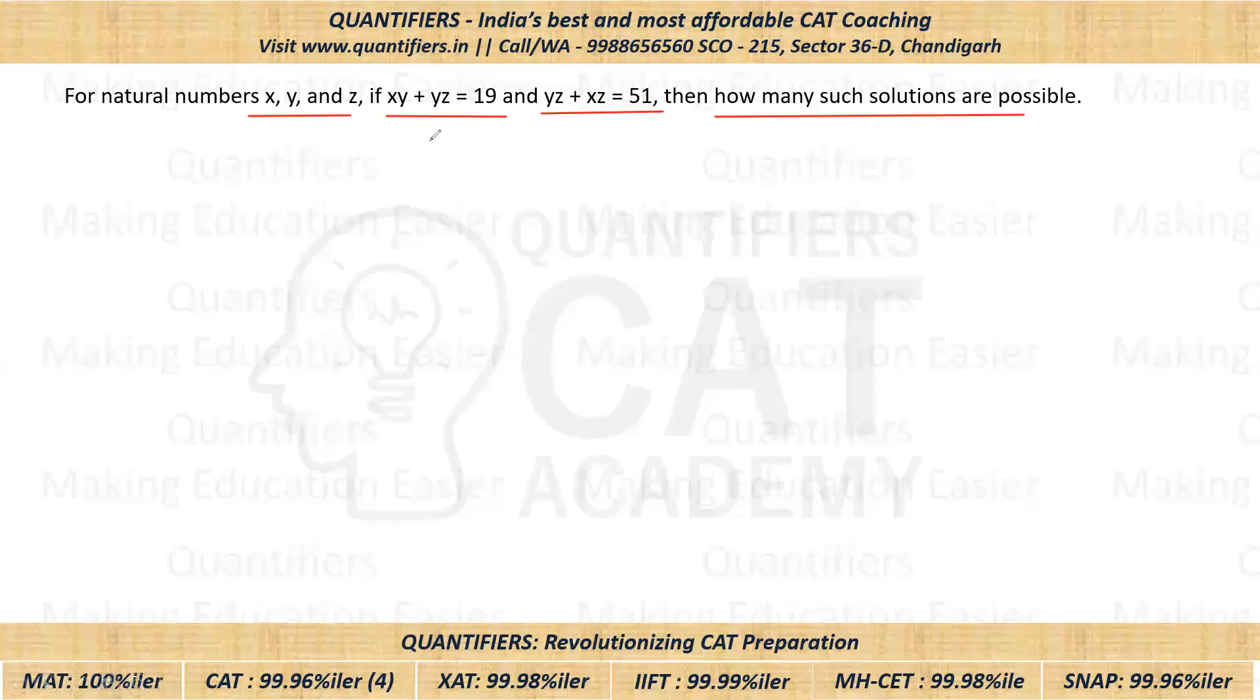Now look here. If I use the first equation, you can see y is common. So if we take y common, we will get y times (x plus z) equals 19.